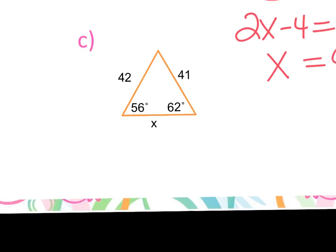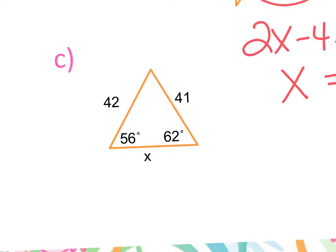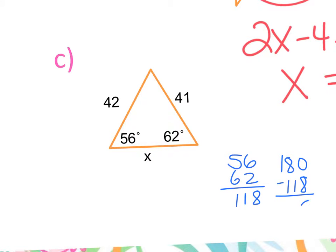In part C, does it look isosceles yet? Not yet. Find the third angle: 56 plus 62 is 118; subtract from 180 and you get 62. Now do we know it's isosceles? Yes — if these two angles are congruent, then the sides opposite them are congruent.